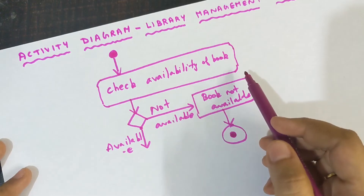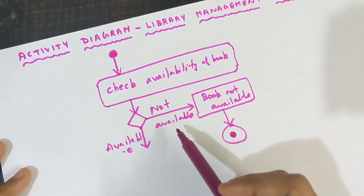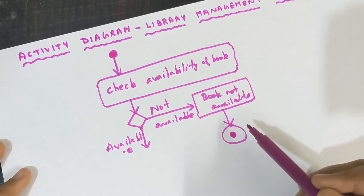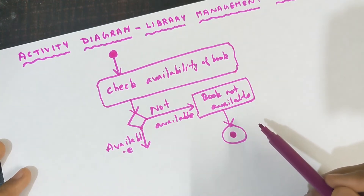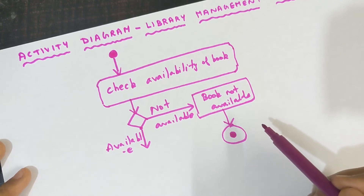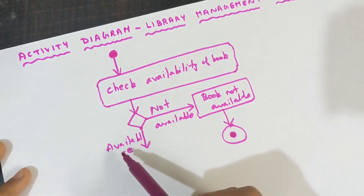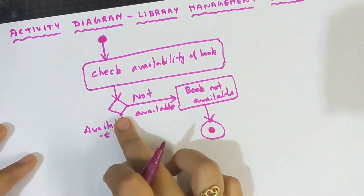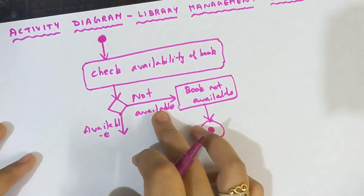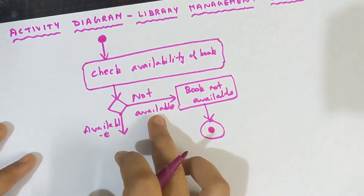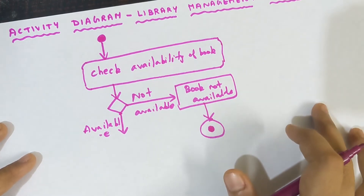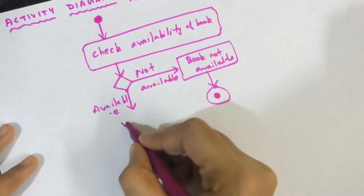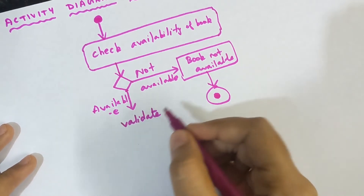You are checking for the availability of the book and deciding whether the book is available or not available. If it is not available, you write 'book is not available' — since the book you need is not there, you can leave the library. If the book is available, then there are further procedures which need to be followed. If book is not available, the process ends; if book is available, you need to follow the other procedures.